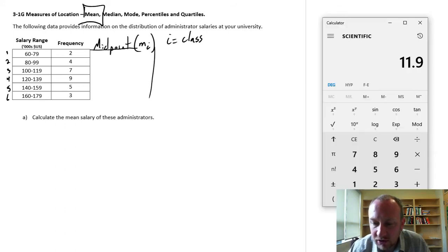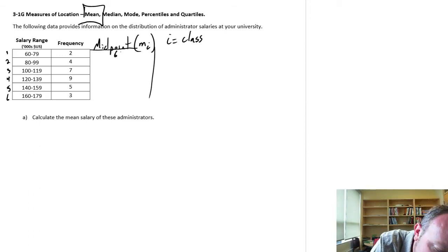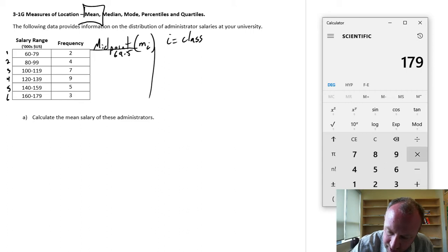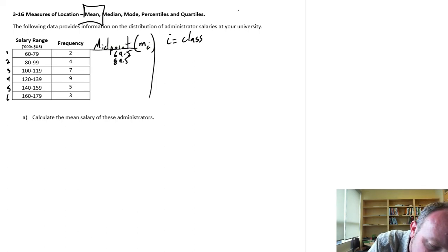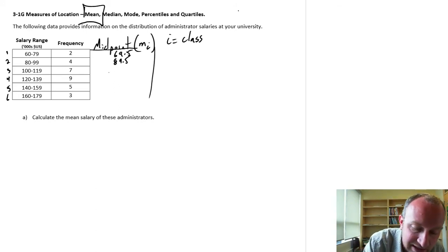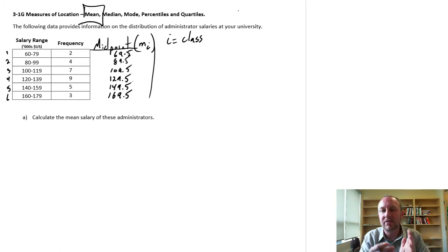So if we start with the first, I have 61 plus 79 divided by 2. So the middle of this class is 69.5. The next one will be 80 plus 99 divided by 2, which is 89.5. Now I'm going to take a bit of a shortcut. I know that the difference between each of these midpoints is going to be a value of 20. So I can fill this in and the next one will be 109.5, 129.5, 149.5, and finally 169.5. So here I've got all of my midpoints.